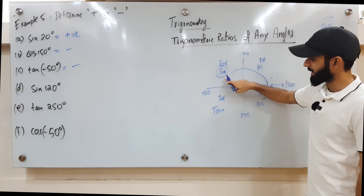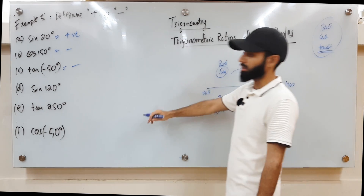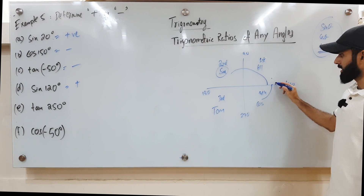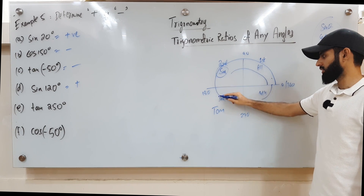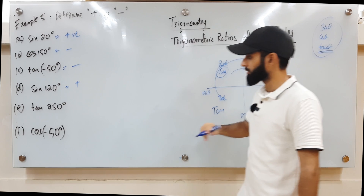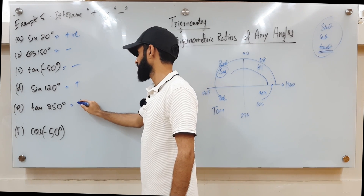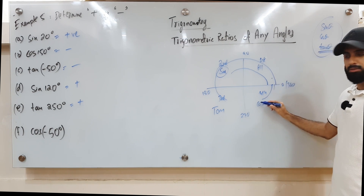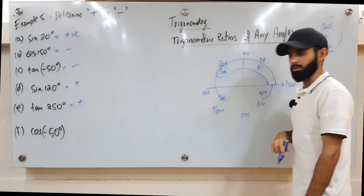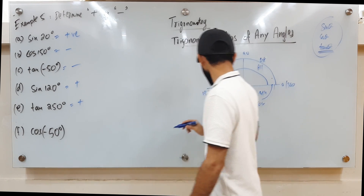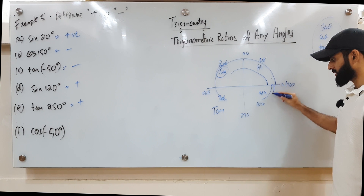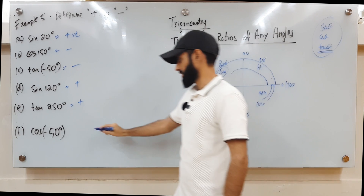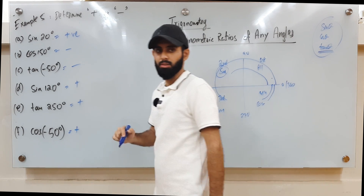Sine 120: 120 takes me into the second quadrant, which is the home ground of sine, so sine is happy — that's positive. Tan of 250: 250 takes me into the third quadrant, which is the home ground of tan, so that's positive. Cos of negative 50 means I end up in the fourth quadrant, which is the home ground of cos, so that's going to be positive.